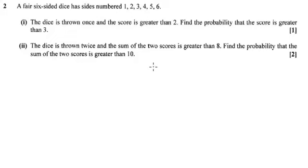It says the dice is thrown twice and the sum of the scores is definitely greater than 8. Find the probability that the sum of the two scores is actually greater than 10.